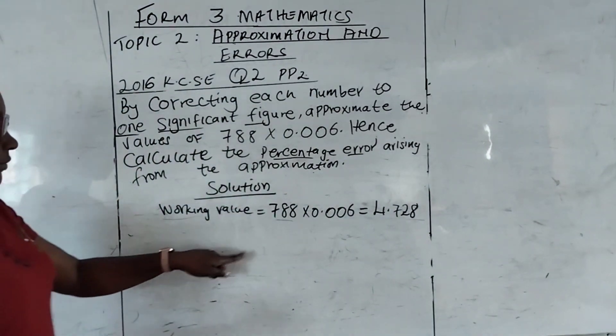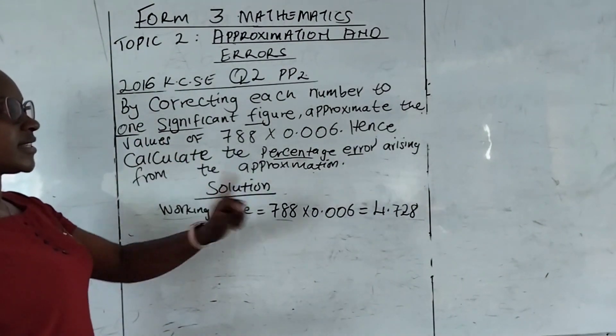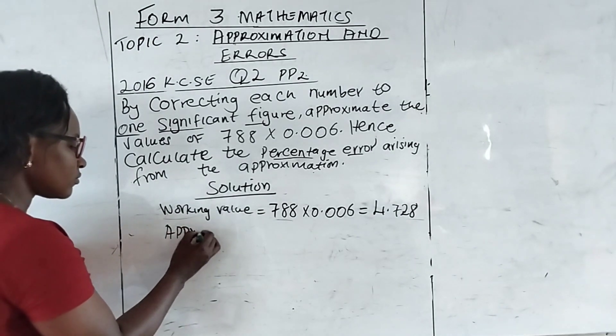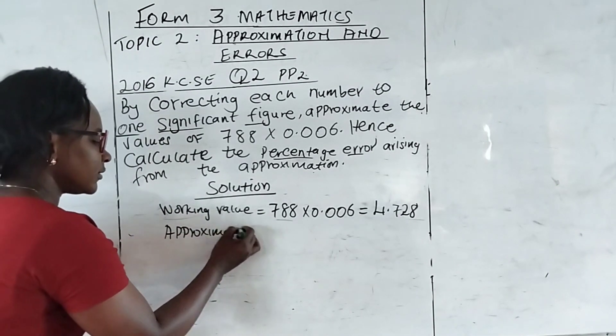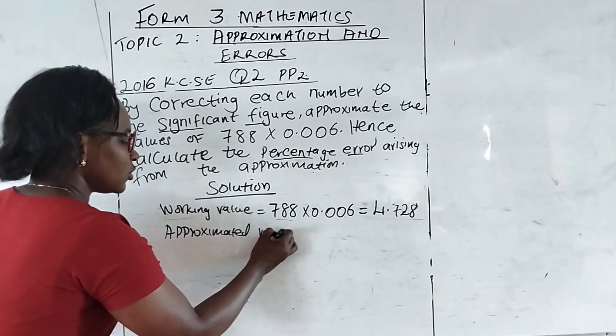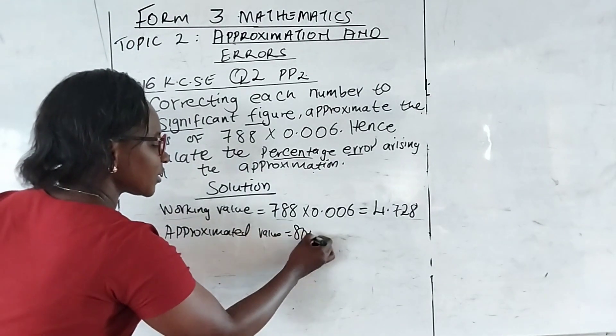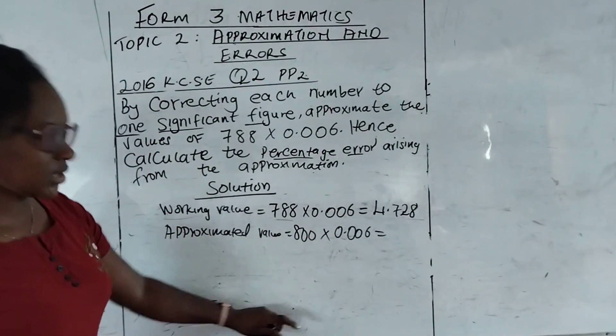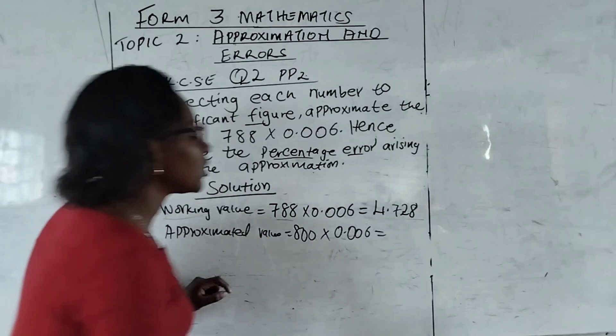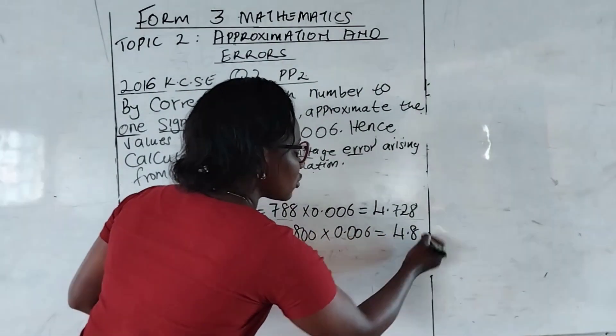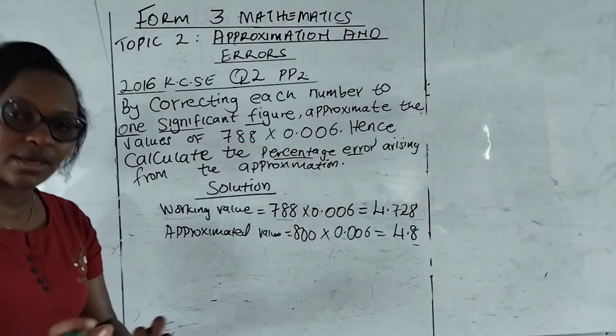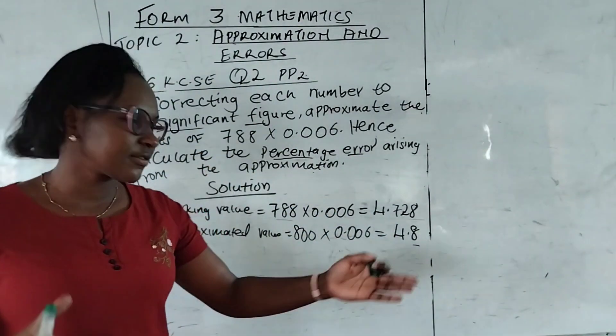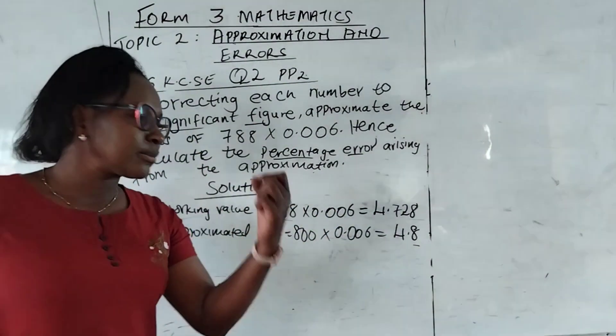788 after approximating one significant figure, this one is an approximated value. We have 800 multiplied by 0.006. And our product is going to be 4.8. That's all we have. We don't have maximum value, minimum value or whatever. That's what I had to do in my previous video.